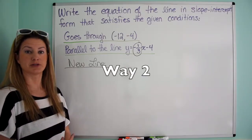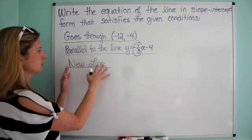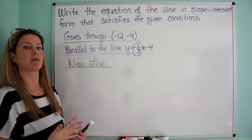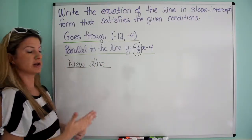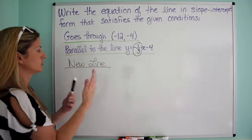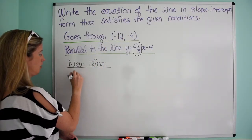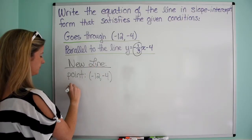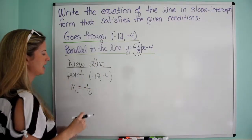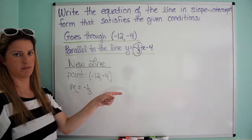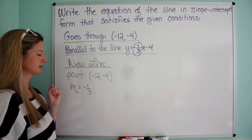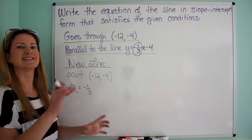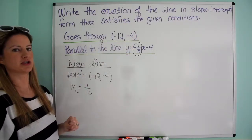That's way one. Let's talk about another way to approach this problem. The pieces of information we have are a point and a slope. I want to get it in slope-intercept form, but since I have a point and a slope, I can put it in point-slope form and then simplify to get slope-intercept form.